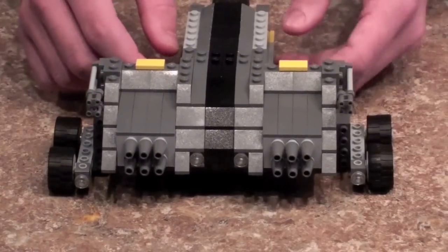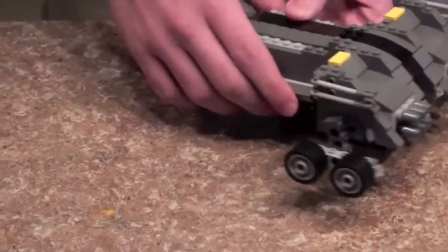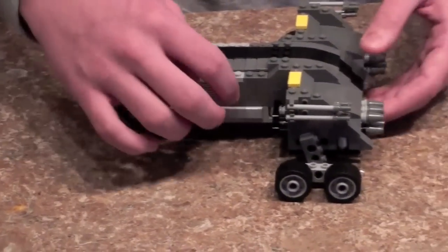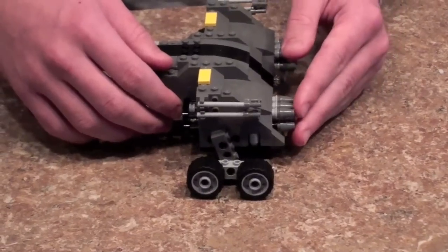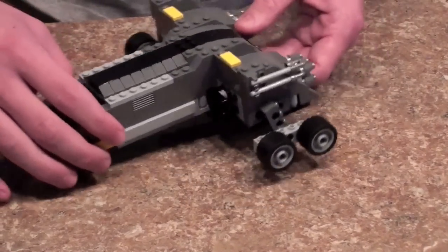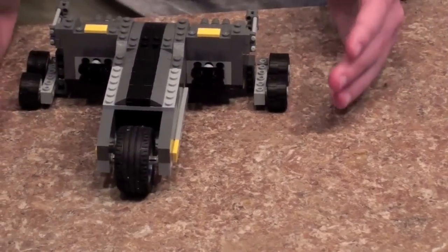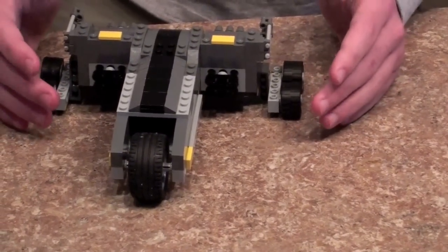Anyway, the flick fire missile mechanism has it to where if you push this, the missiles will come out the front. Now I bought this version as a test to make sure everything worked in the set. I have changed a few things on the file that is for sale to make it better.